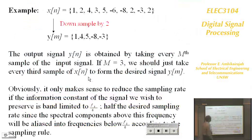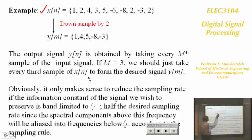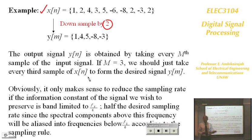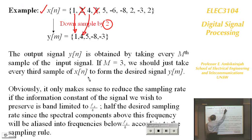Here is a concrete example. You have an input signal with some values, and we are going to downsample by 2. Downsampling by 2 means you retain every second sample: retain one, discard one, retain the next, discard the next, and so on. Downsampling by 3 would mean retaining every third sample.